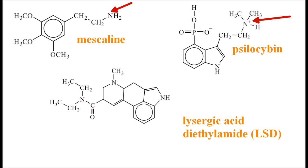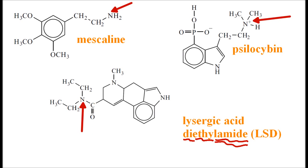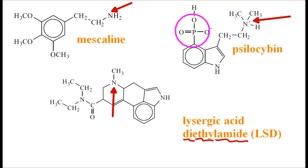Psilocybin has a tertiary amine there. And that looks like an amine in LSD, but it isn't — because that carbonyl, that C double bond O, makes it into an amide. The actual amine is there — a tertiary amine just on that part there.